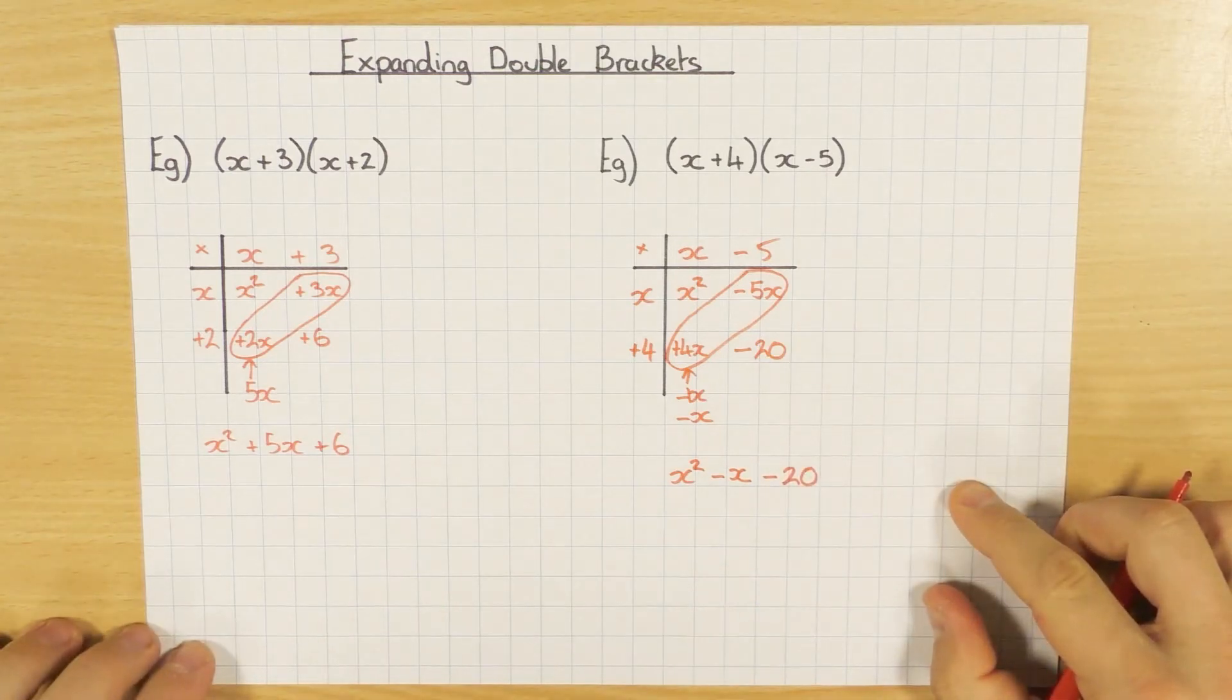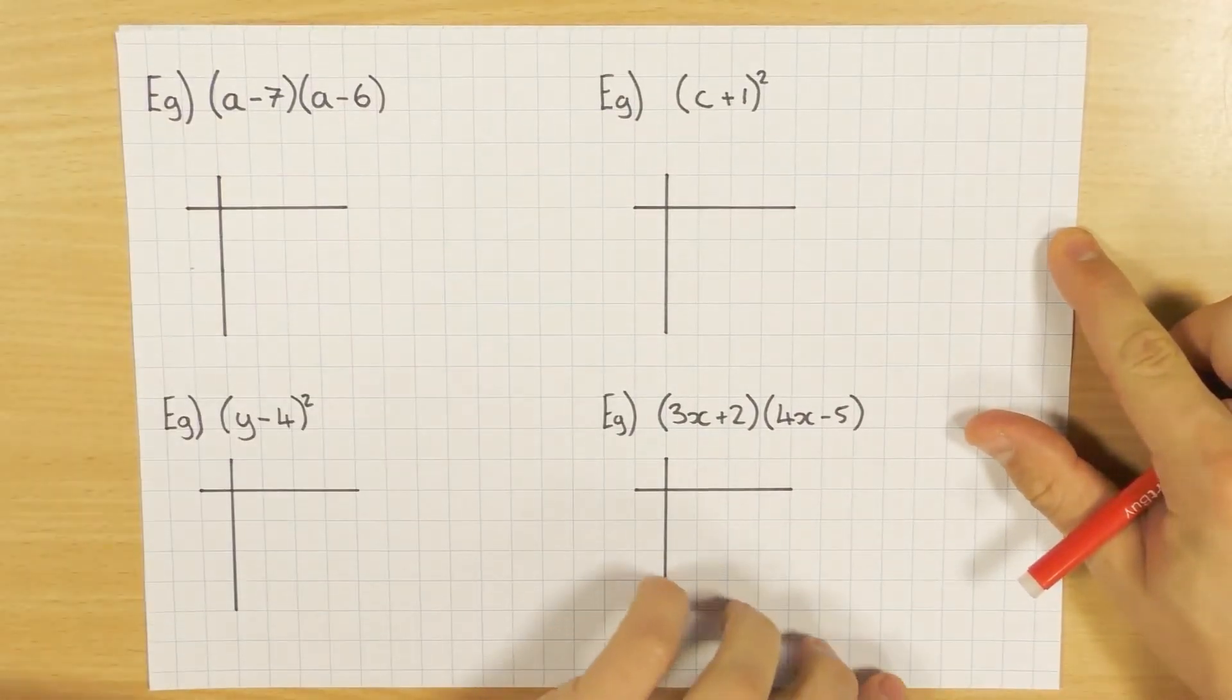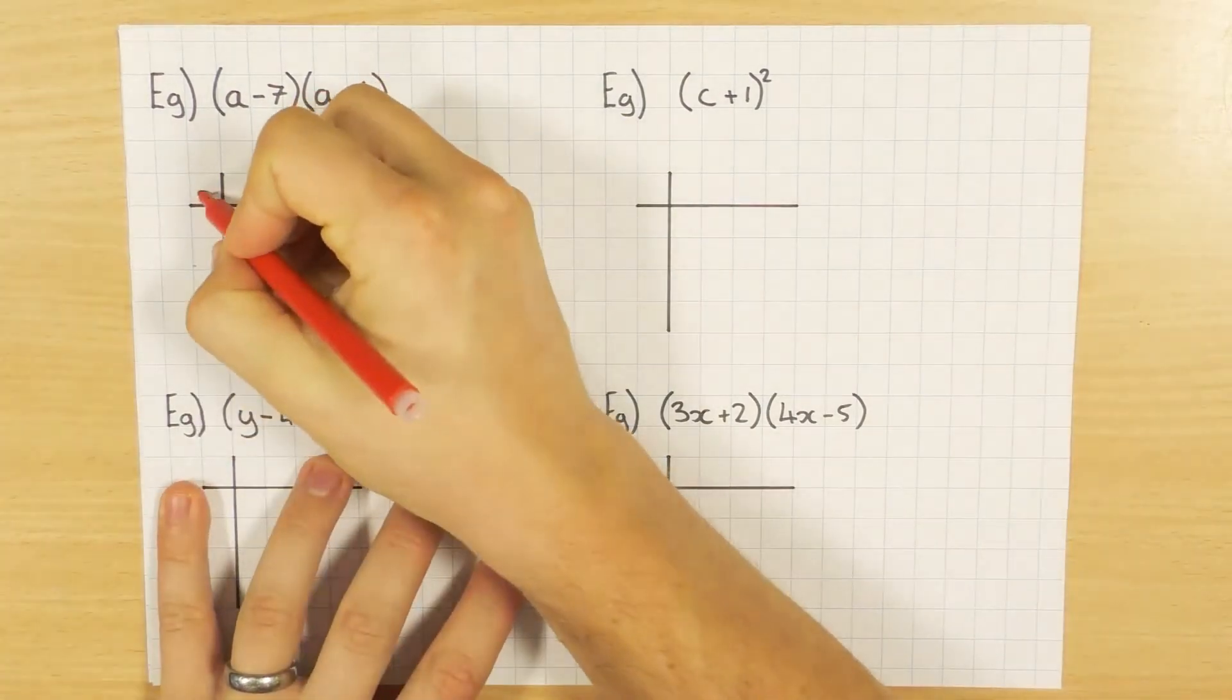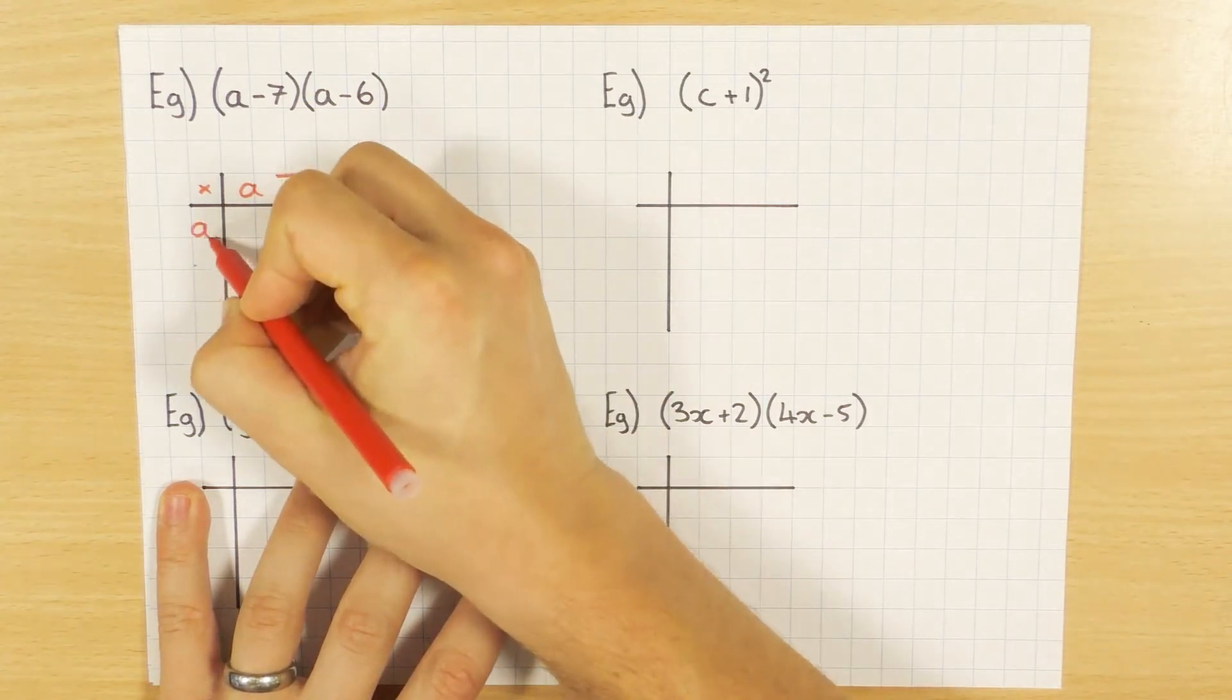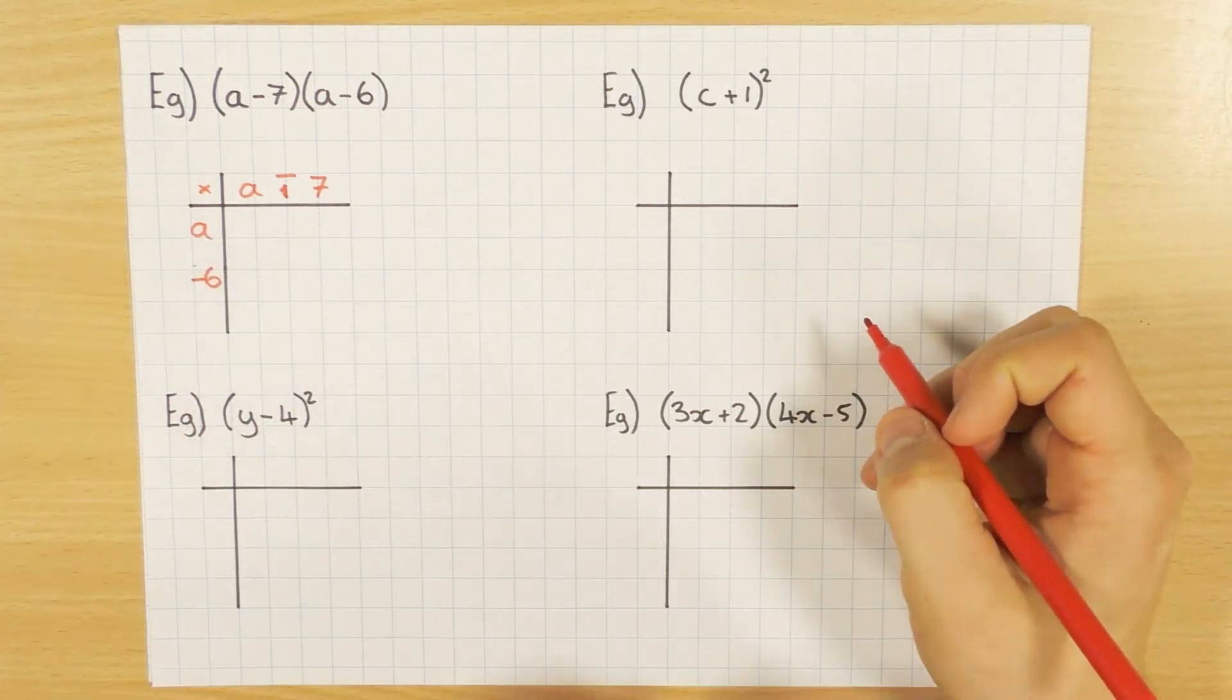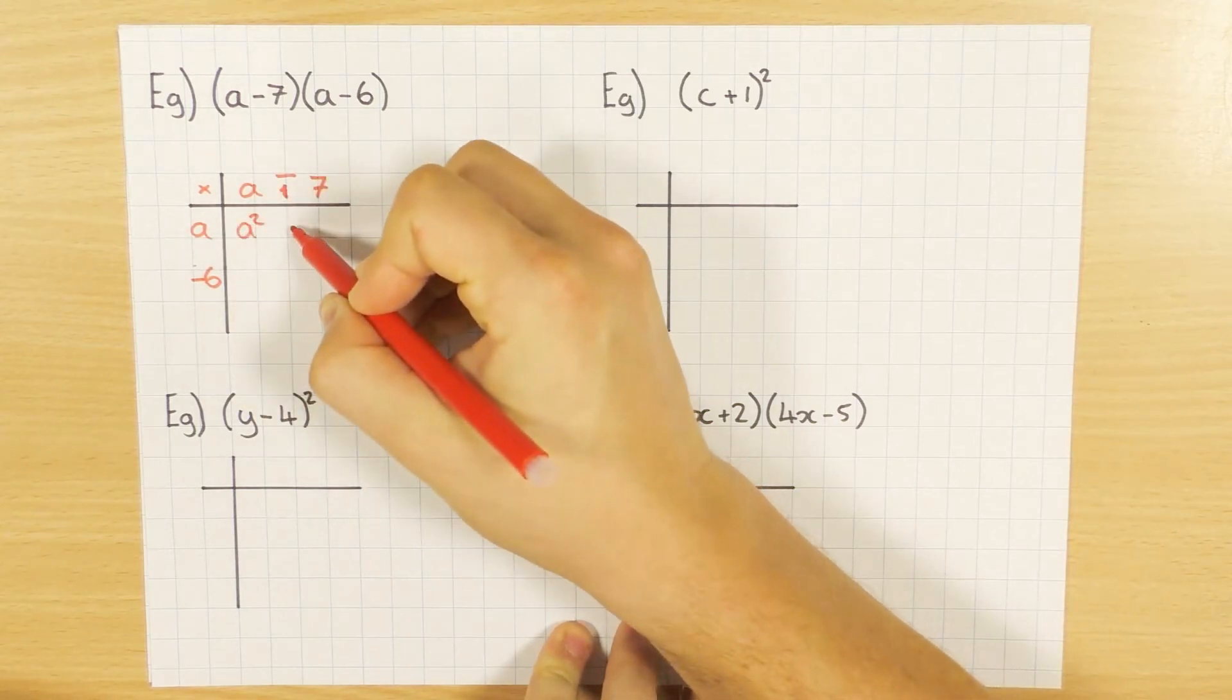Okay, let's have a go at some more. So this example here is illustrating another point to be careful of. So again we are multiplying. One bracket at the top, oops sorry that's a minus 7, and a minus 6. Okay, so again we are multiplying. So a times a is a squared, a times minus 7 is minus 7a.